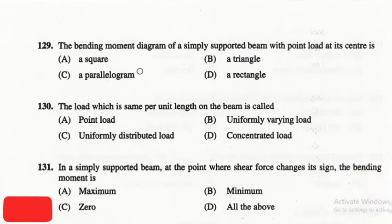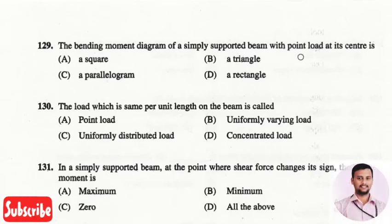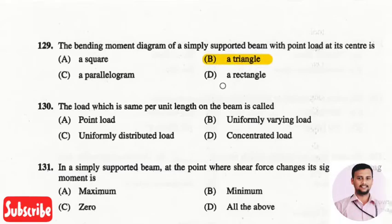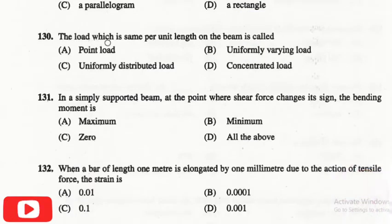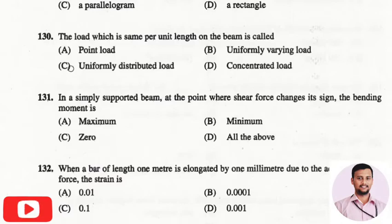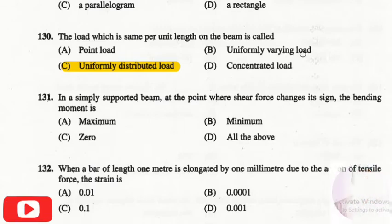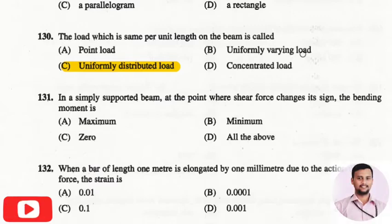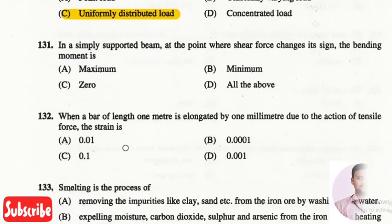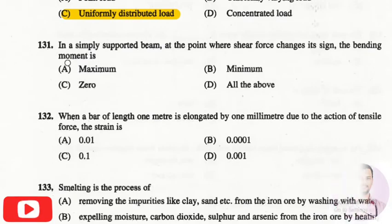The next question is: the bending moment diagram of a simply supported beam with a point load at its center is? The right answer is option two, that is a triangle. The next question is: the load which is the same per unit length on a beam is called? The right answer is option three, uniformly distributed load. A varying load has different magnitudes at different positions, but since the load is the same per unit length, it is a uniformly distributed load.